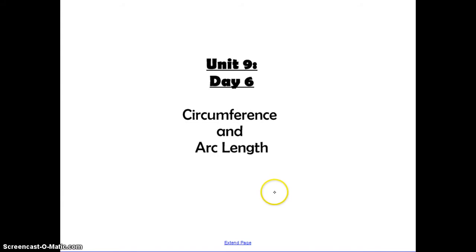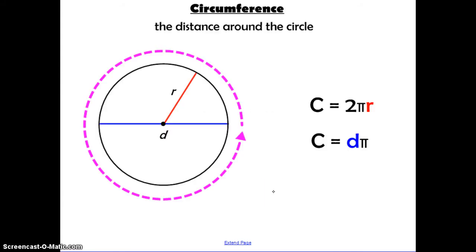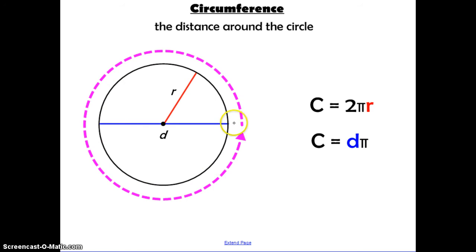Unit 9, Day 6: Circumference and Arc Length. The circumference is the distance around the circle. When we're talking about the actual physical distance, that means we're measuring in centimeters, inches, feet, yards, or meters. So we're not talking about the 360 degrees around the circle — we're talking about the physical length.